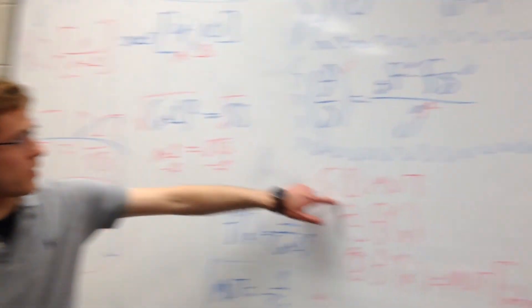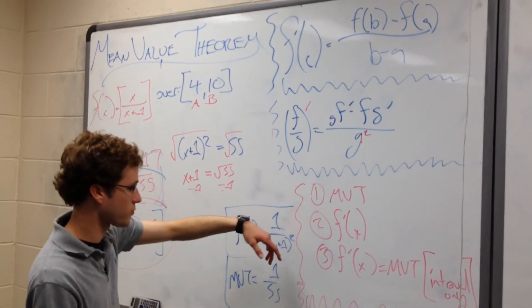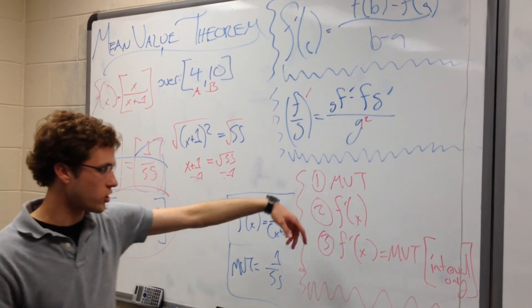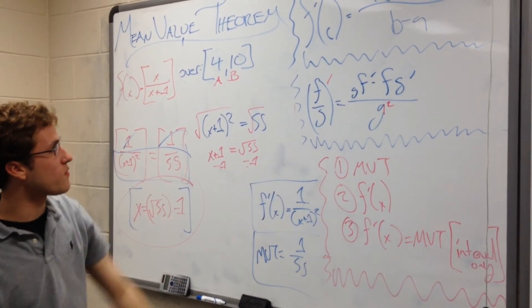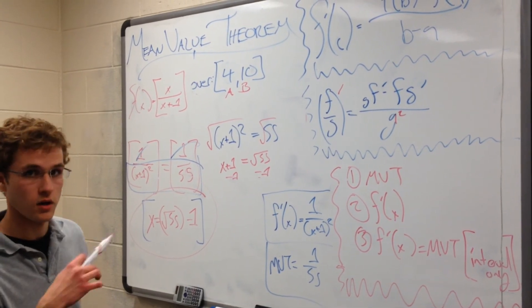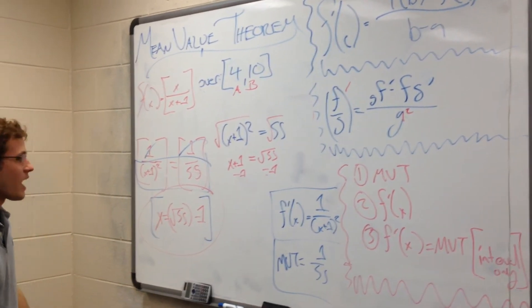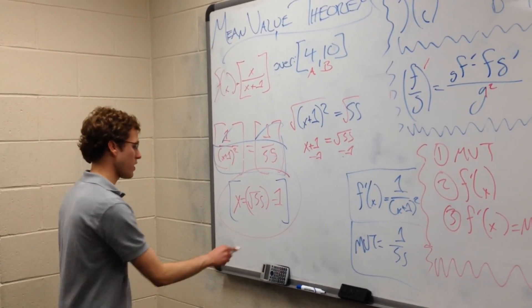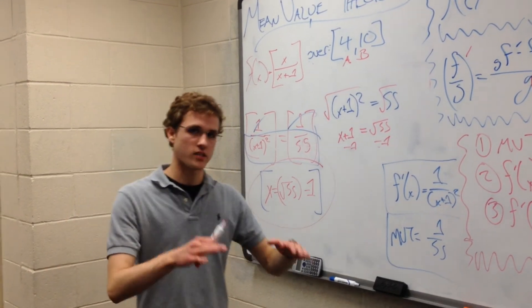Quick recap. We plugged everything into the mean value theorem formula after finding A and B from our set that we supplied for our interval. We took f prime of the original function. We took its derivative. We set the derivative and the answer from the mean value theorem formula equal to one another. Then, we just did simple algebra to solve and arrive that our mean derivative for this entire thing, or our c prime, is rad 55 minus 1. It's just that simple.